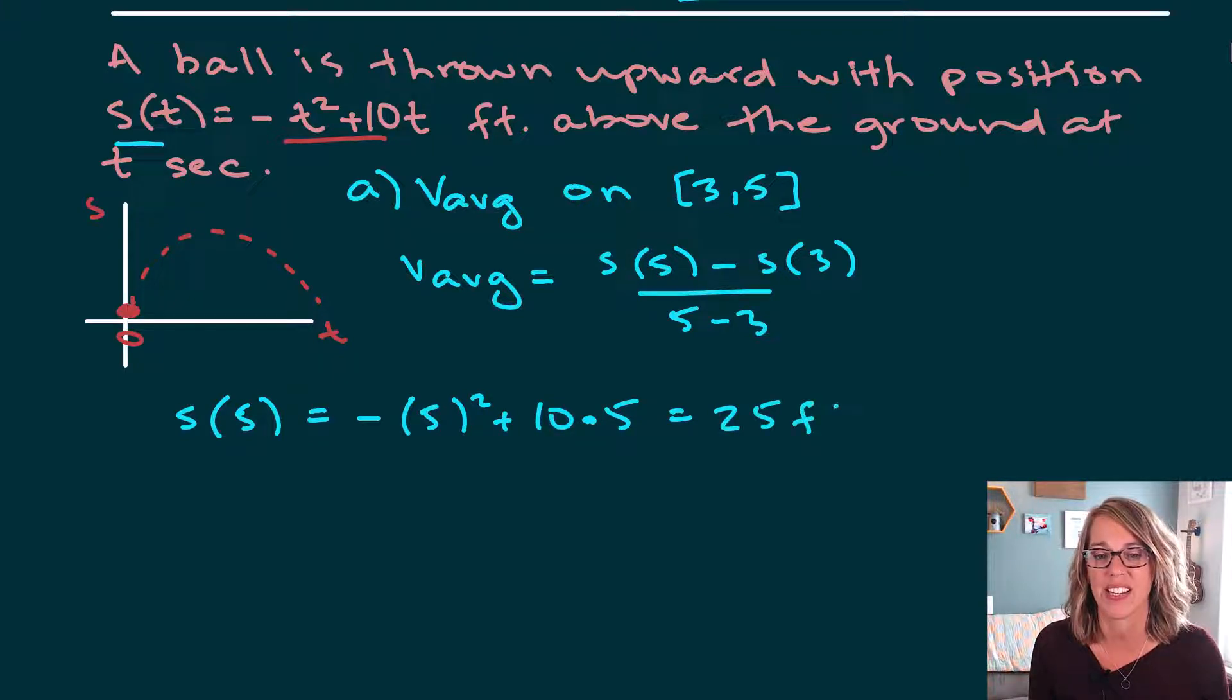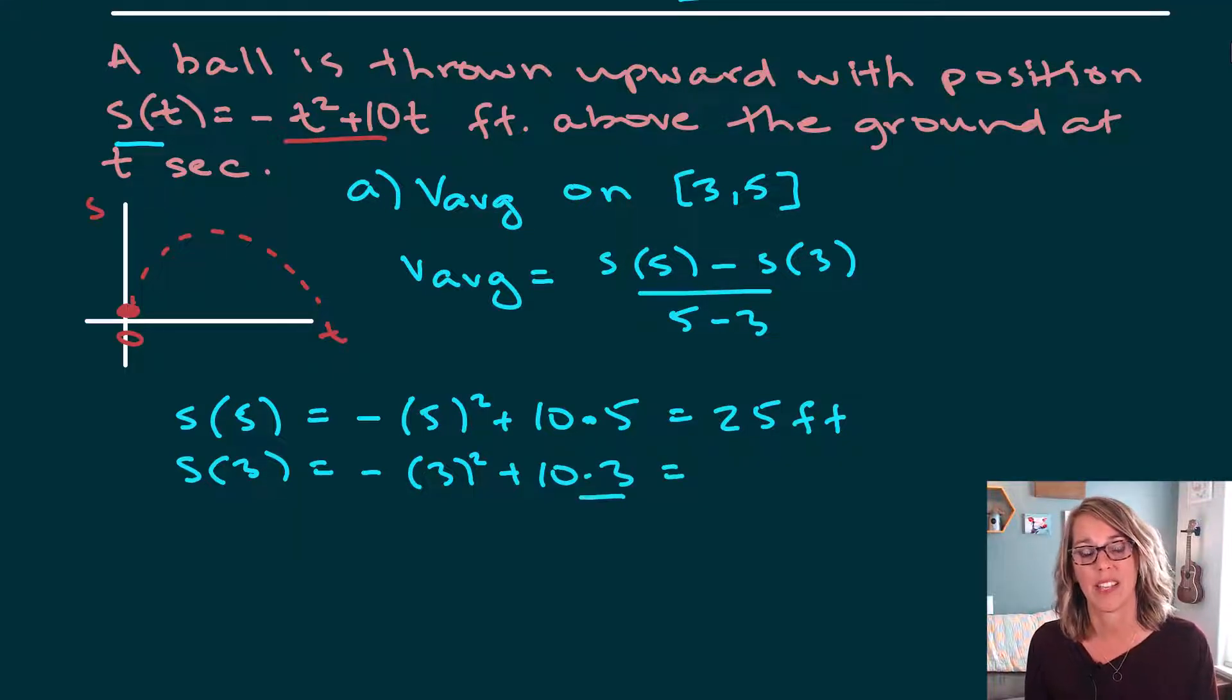Remember that is our distance from the ground. That's 25 feet. I'm going to do the same thing for three. When I put three in, I get negative three squared plus 10 times three. So that's going to be negative nine plus 30, which is 21 feet.